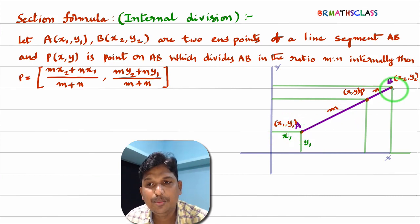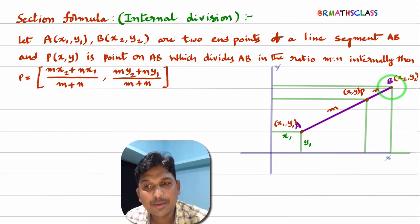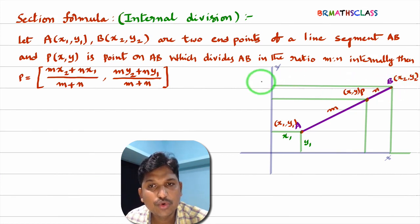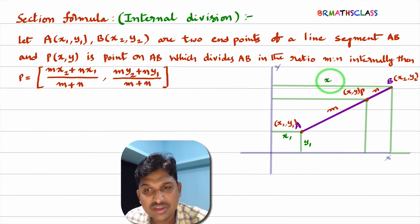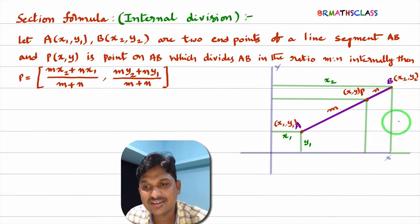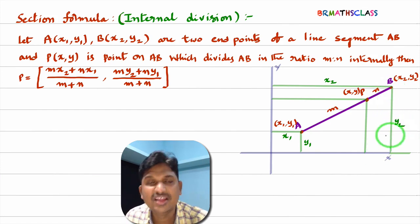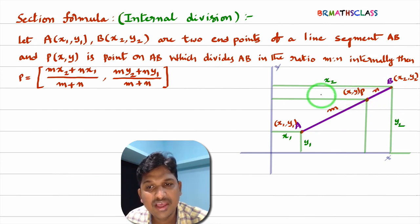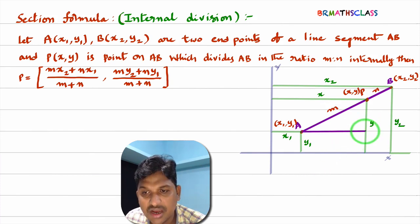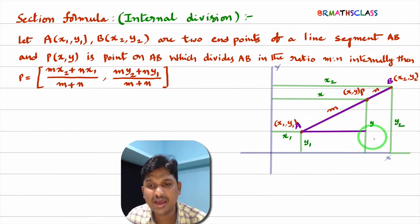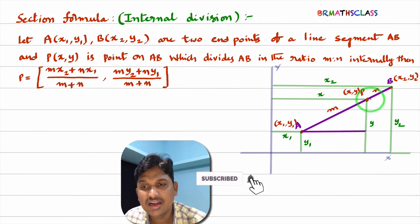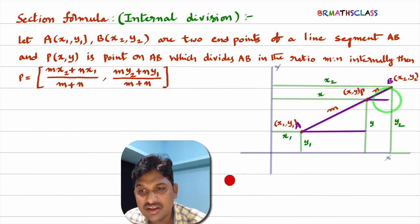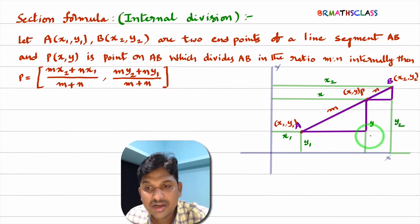B is (x2, y2), which means the perpendicular distance from this point to the y-axis is x2, and the perpendicular distance from this point to the x-axis is y2. Similarly, as we consider point P as (x, y), the horizontal distance is x and the vertical distance is y. I draw AC parallel to the x-axis and PD also parallel to the x-axis.